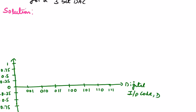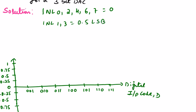We will solve the problem now. From the transfer curve: INL(0), INL(2), INL(4), INL(6), and INL(7) are all equal to 0. INL(1) and INL(3) equal +0.5 LSB as given in the transfer curve. And INL(5) equals minus 0.75 LSB. Now we can plot the INL for the non-ideal 3-bit DAC.